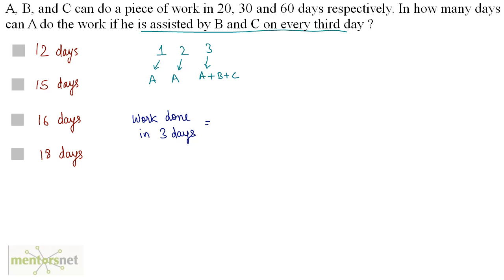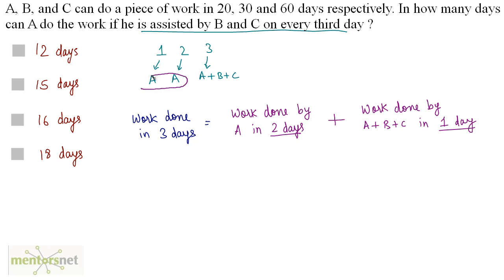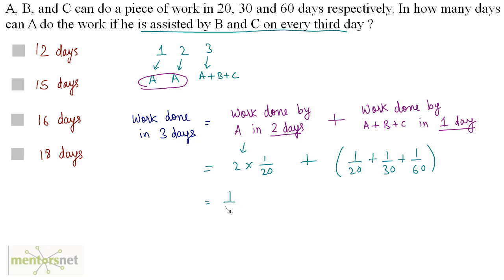Let us calculate the work done in 3 days. It equals work done by A in 2 days plus work done by A, B, and C in 1 day. Work done by A in 2 days is 2 times 1/20. Work done by A, B, and C in 1 day is 1/20 plus 1/30 plus 1/60, which equals 1/10. So total work in 3 days is 1/10 plus 1/10, which is 2/10, equal to 1/5.